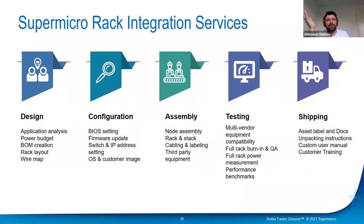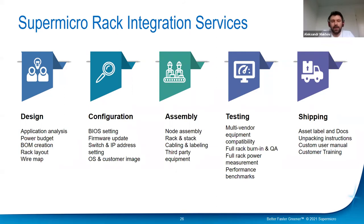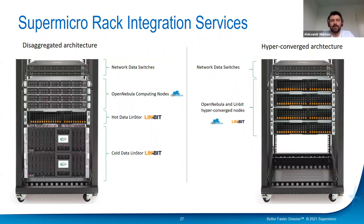The last part of Supermicro's business I want to mention is the Rack Integration Service. Customers can order a full rack with all cabling, calculated power consumption, and benchmarking from Supermicro. The system will be fully tested and validated. If customers want to use their own network hardware like Cisco or Mellanox switches, they can ship those switches to Supermicro and we will integrate the client's network hardware into our rack, including VLAN and network settings. As an example, we can build a cloud solution design based on LinBit and OpenNebula software with Supermicro hardware.